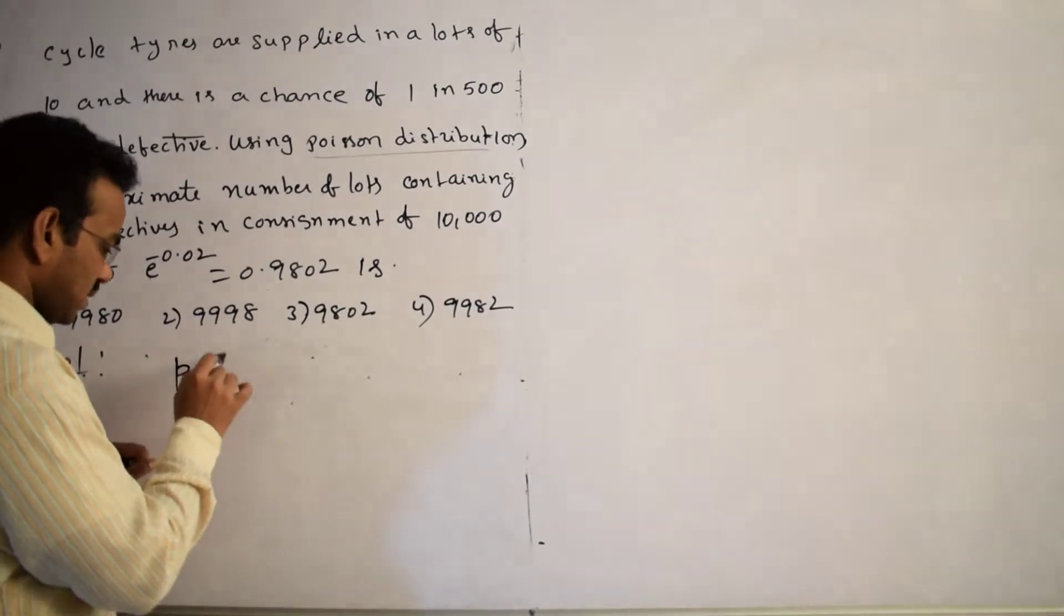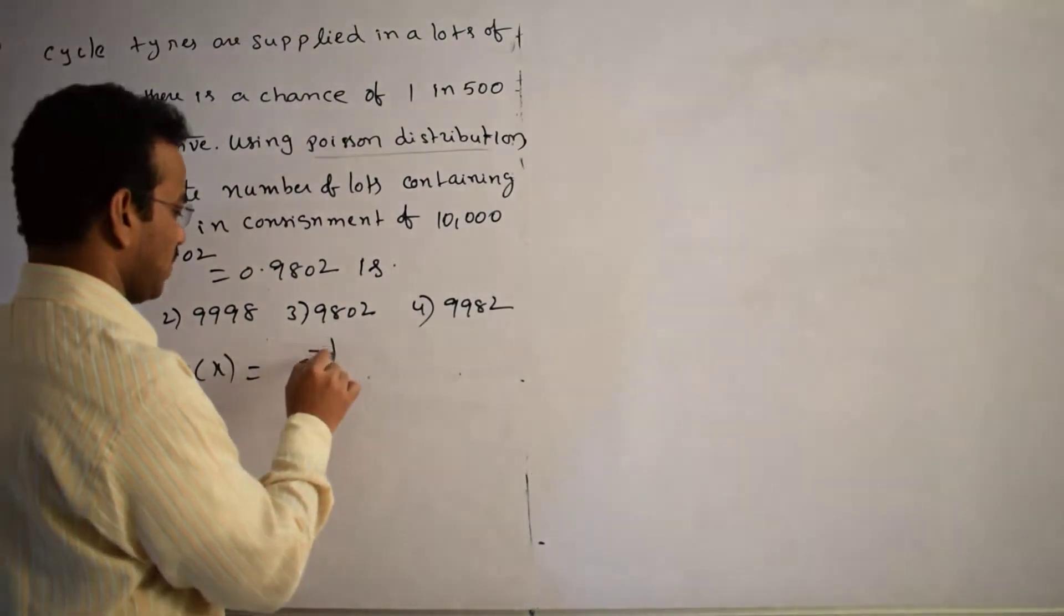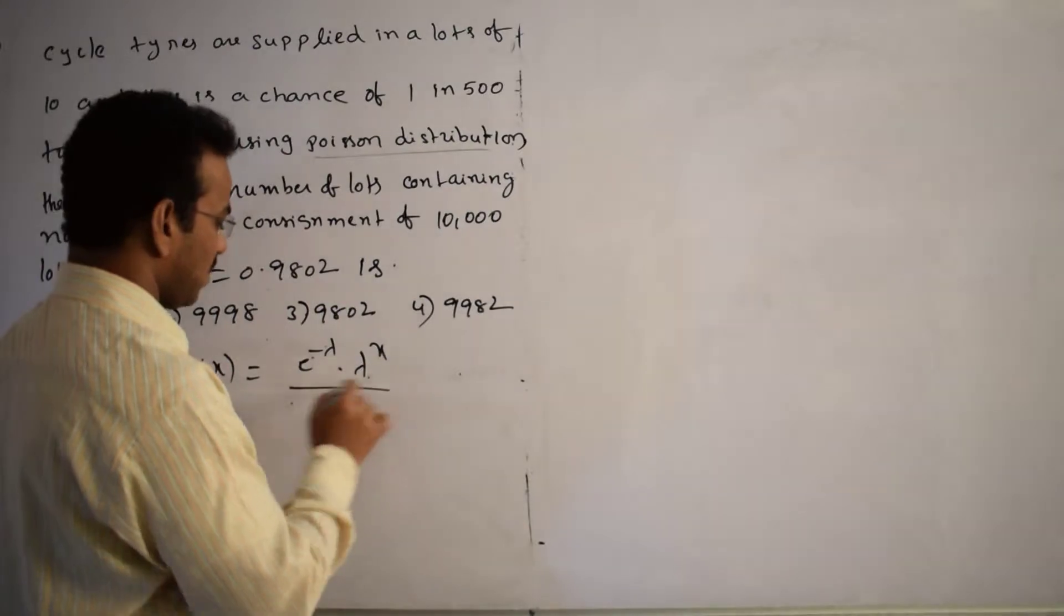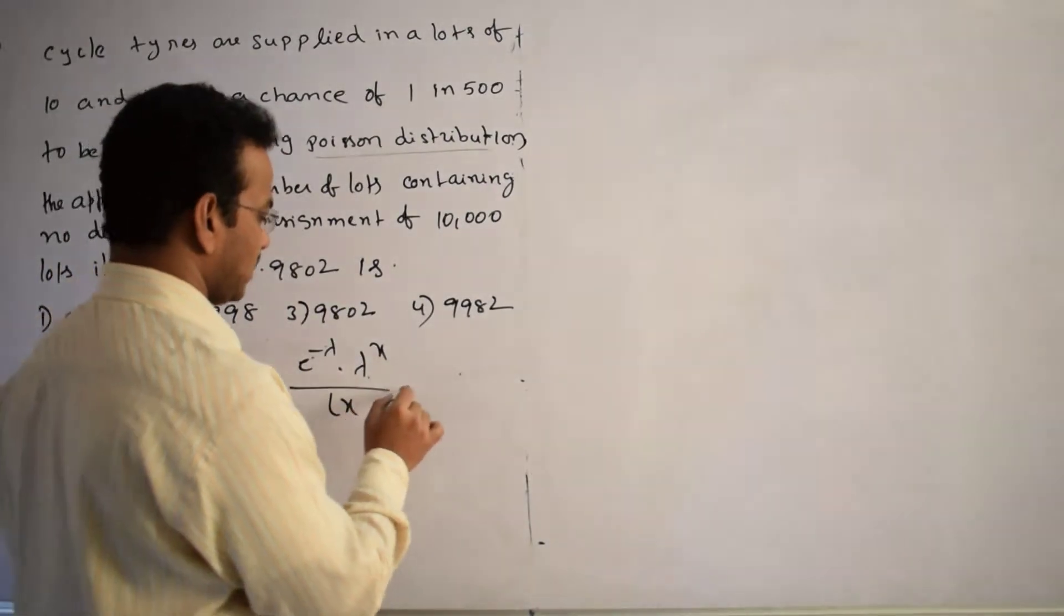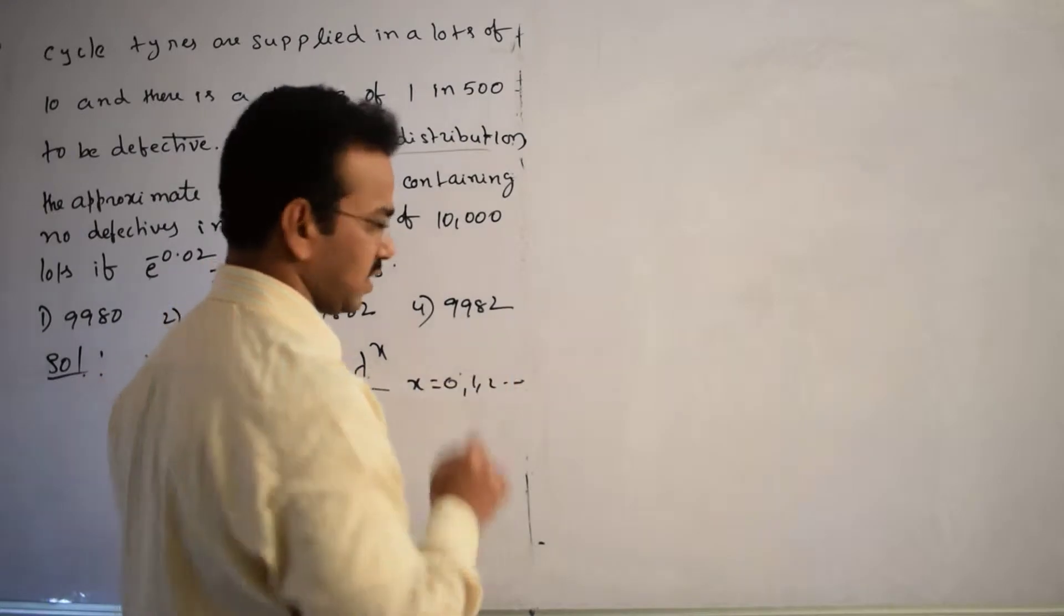Probability mass function of Poisson distribution: P(x) equals e power minus lambda into lambda power x by factorial x, where x equals 0, 1, 2, and so on.